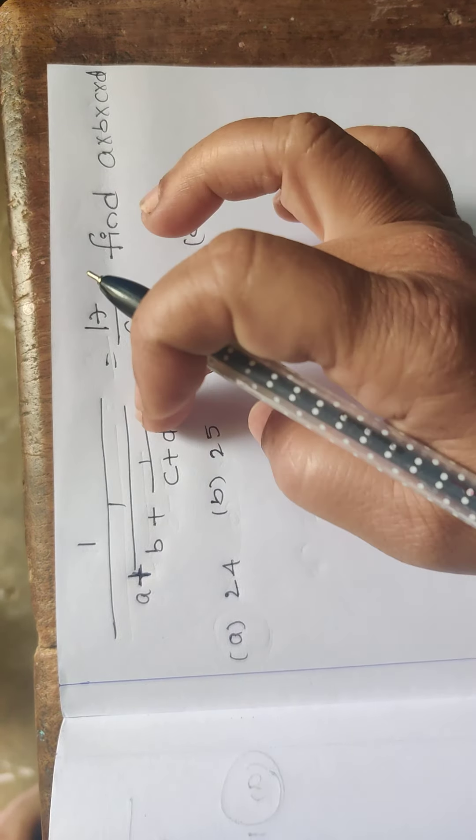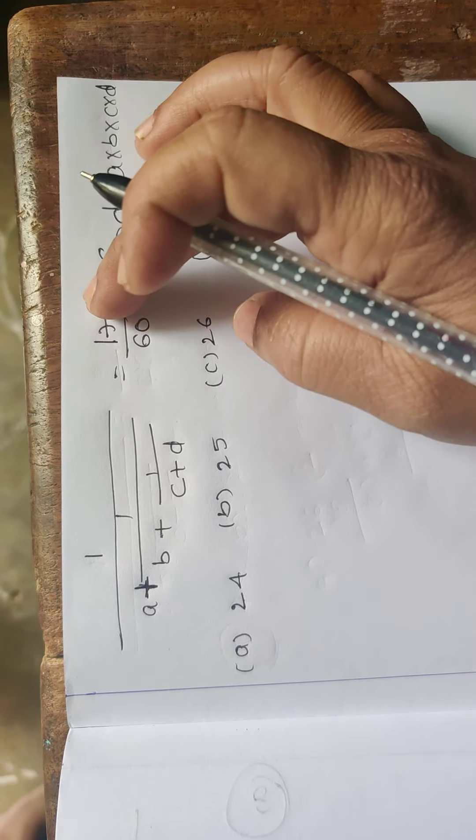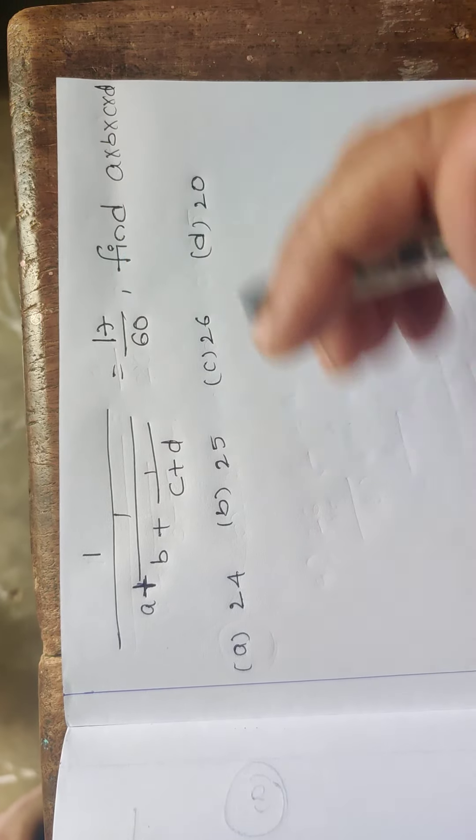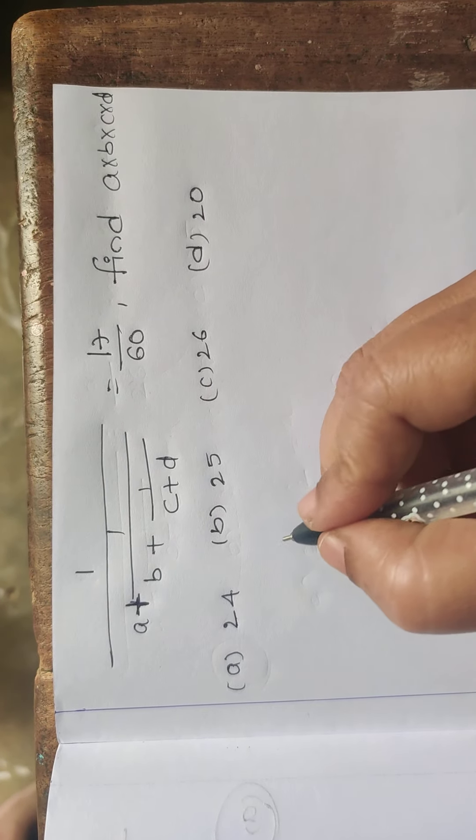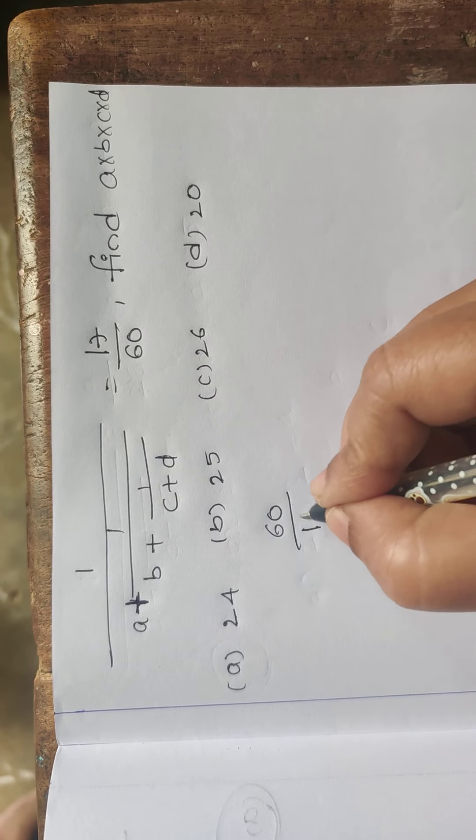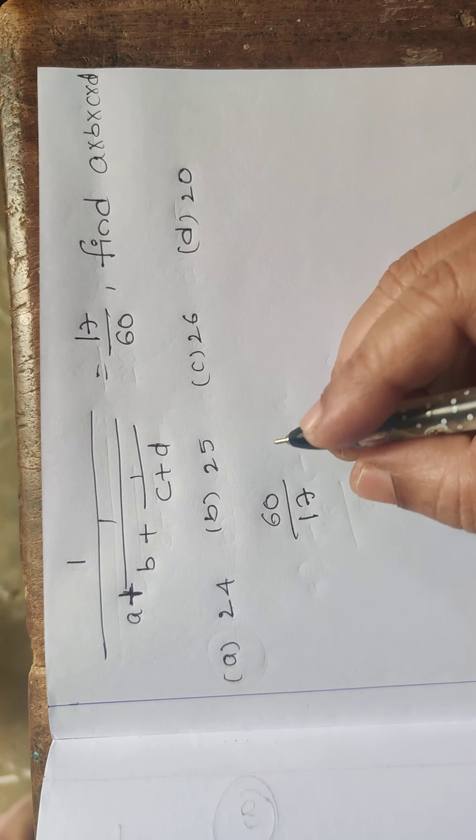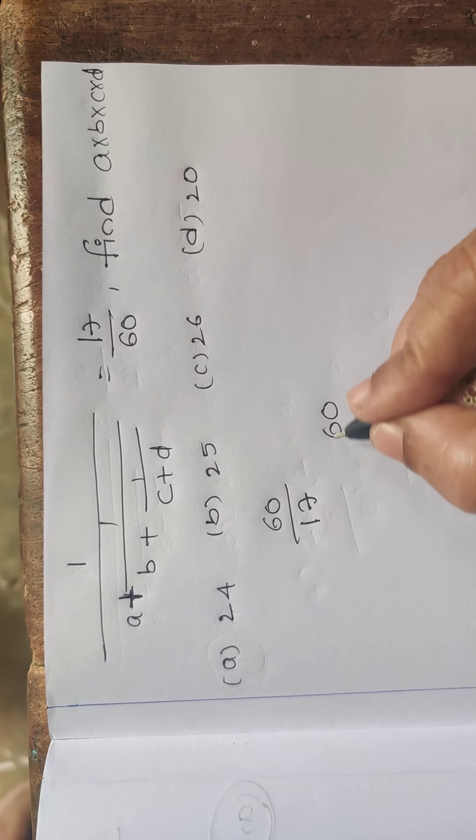This is the problem. If you don't have a division, you will have a problem with this division. Then you will have 17 by 60. Now you can divide this 16 and 17.